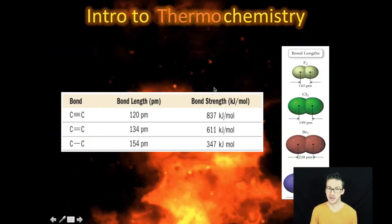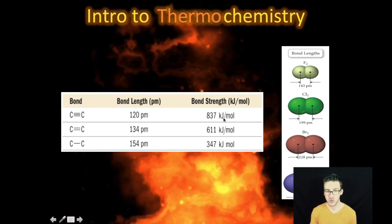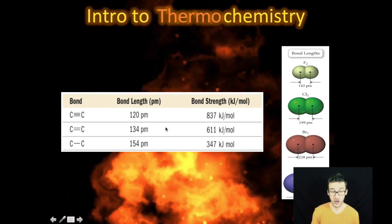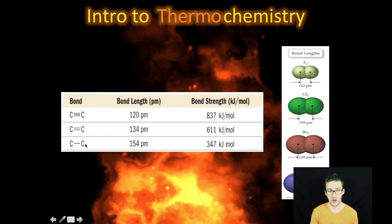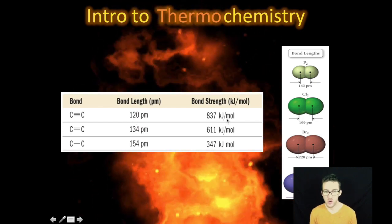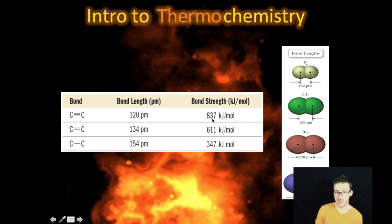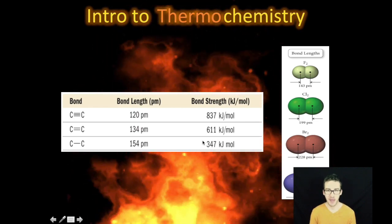So as you look at and interpret data tables that involve both bond lengths and bond strengths, and you've got an example in your notes and on your screen there, typically single bonds are the longest, triple bonds are the shortest. However, triple bonds are the strongest and single bonds are the weakest. And again, it comes back to Coulomb's law.